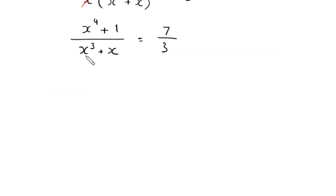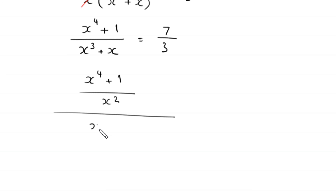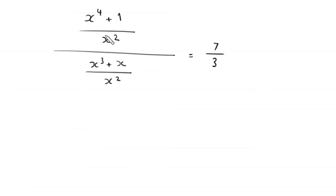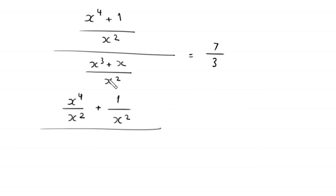Now we divide the numerator and the denominator by x². So (x⁴ + 1) divided by x², all over (x³ + x) divided by x², equals 7/3. The numerator becomes x⁴/x² + 1/x², and the denominator becomes x³/x² + x/x², which equals 7/3.